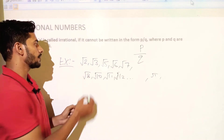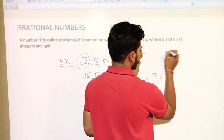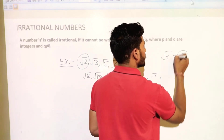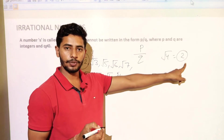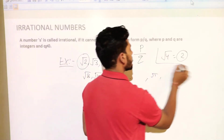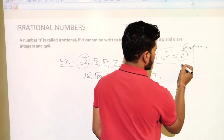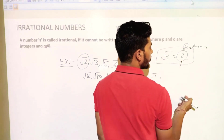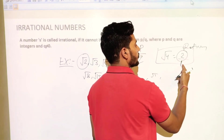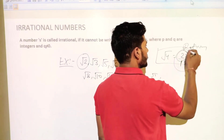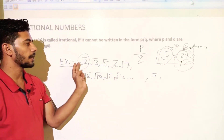Irrational numbers are all those square roots which we can't simplify. Like root 4 — root 4 is 2, so it is a rational number because it can be written as P over Q where P is 2 and Q is 1. So root 4 is a rational number, while numbers like root 2 are irrational numbers.